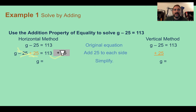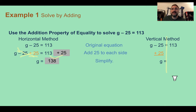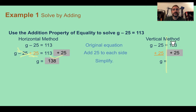Since we did the same operation to the other side, we combine like terms and end up with 138. The vertical method does the same thing, except working downward. My first step is always to draw a line through the equal sign — this reminds me that whatever I do on one side, I have to do on the other. Adding 25 to both sides, the left side cancels out, and on the right, 113 plus 25 is 138.